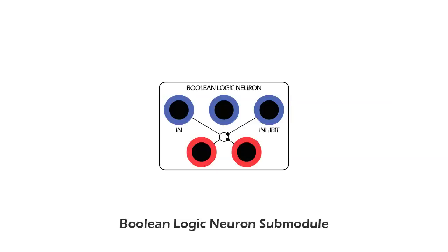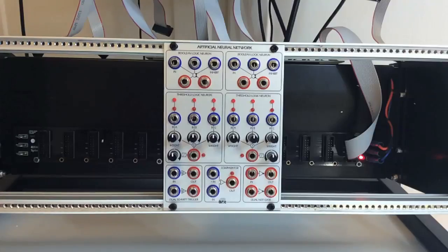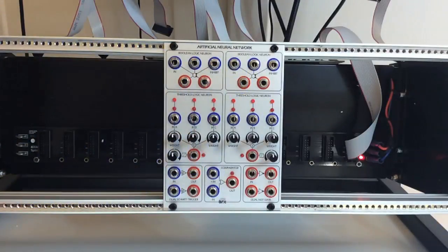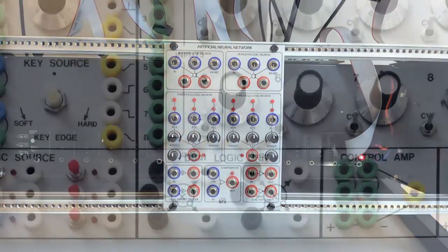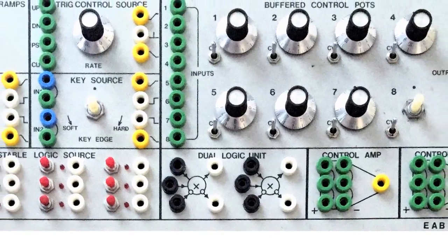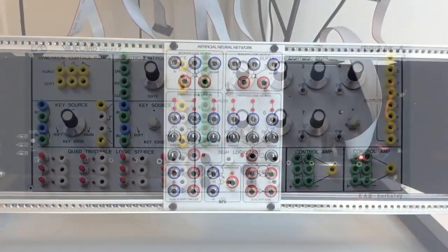Boolean Logic Neuron Submodule. The ANN features two identical Boolean Logic Neuron submodules. The design of these submodules is functionally based on the dual logic unit found on the EAB Video Lab Modular Video Synthesizer.